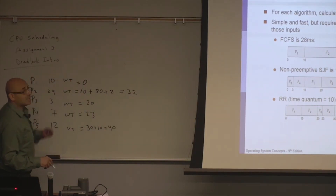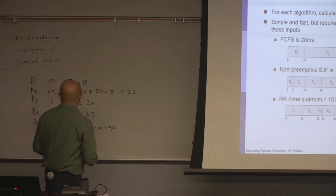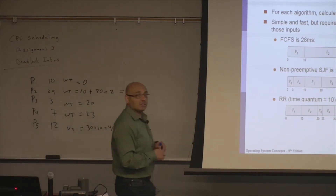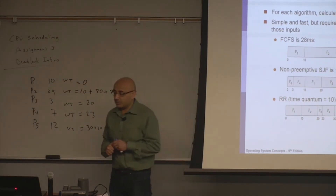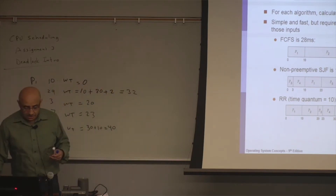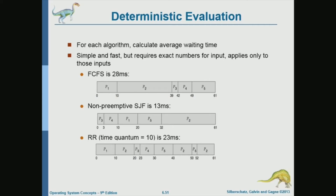We sum these waiting times and divide by 5 to get the average waiting time. This is what we have been doing and what you will do in the assignment.